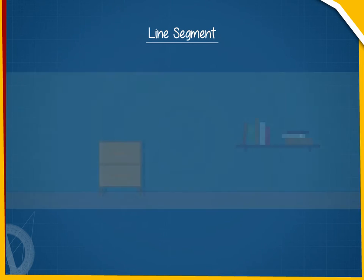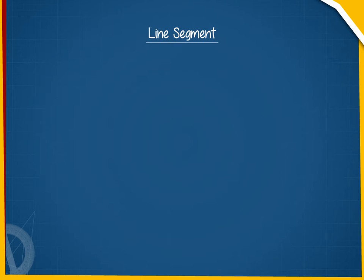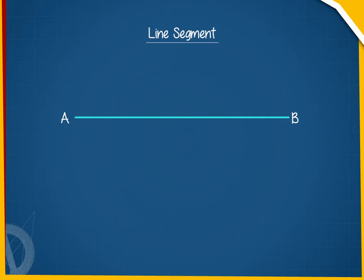A line segment is a part of a line having a definite length. It has two end points.